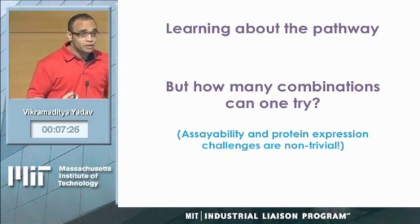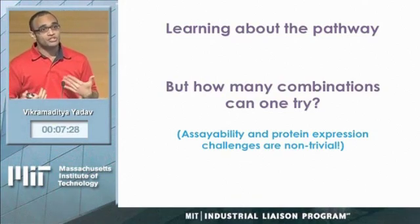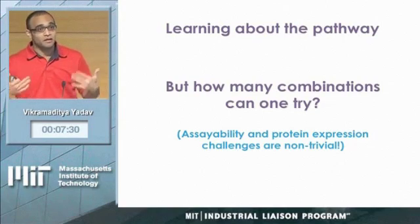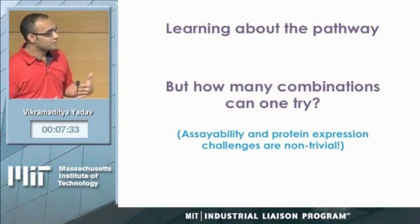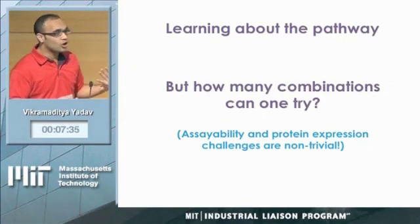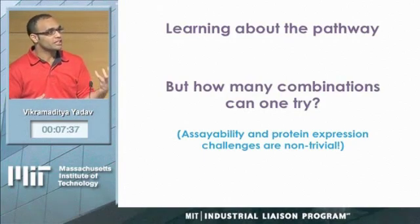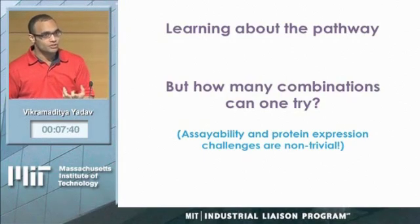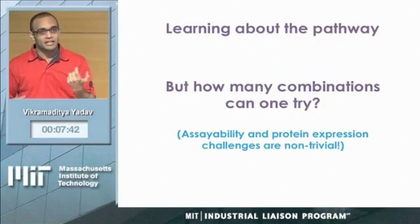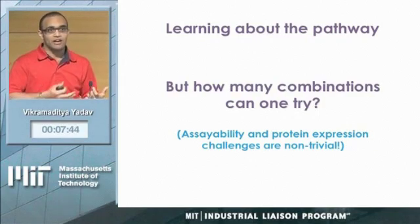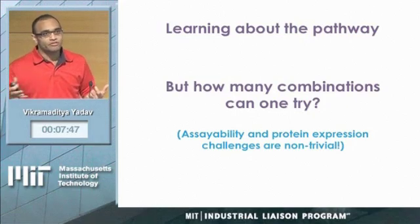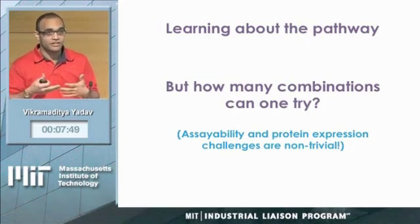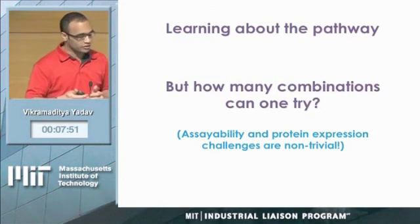This was a very real problem facing me. How many combinations could I try? Having an experimentalist background, this seemed fun at the time, but there's a lot of optimization that goes into ensuring the expression of heterologous proteins in the host. Every single enzyme I express has to be optimized, and I have to have at least 10 to 15 different combinations with no guarantee that these combinations would work out.